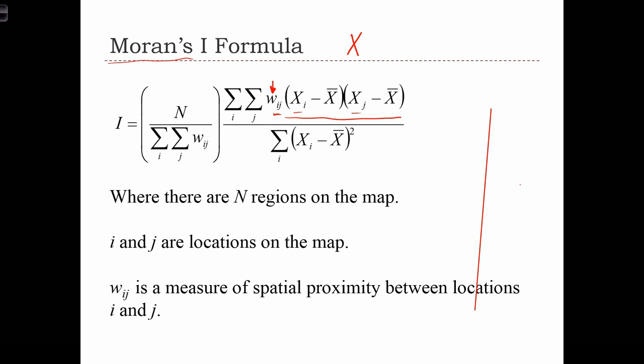On the denominator of the equation, we just have the sum of squares. So this is a total measure of variance in the x variable.